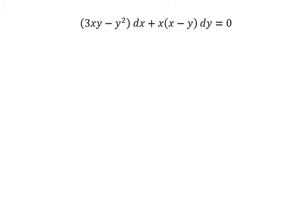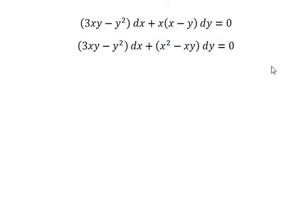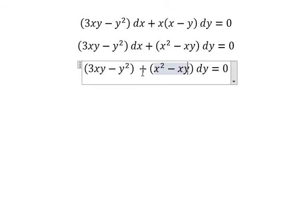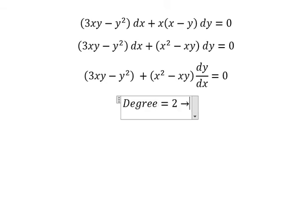Now I want to show you how to answer (3xy - y²)dx + x(x - y)dy = 0. We divide both sides by dx, so we have 3xy - y² plus (x² - xy)(dy/dx) = 0. The degree is 2, so this is homogeneous.